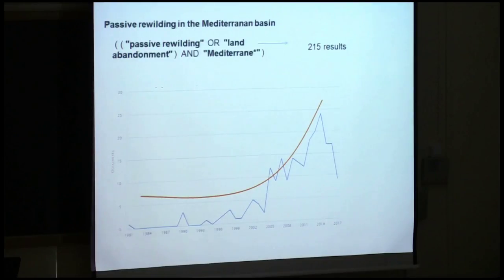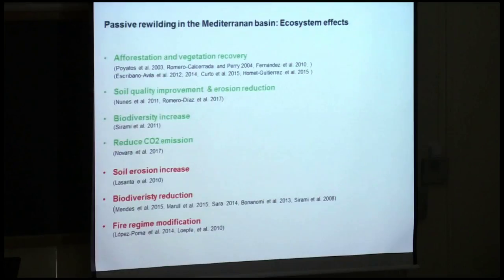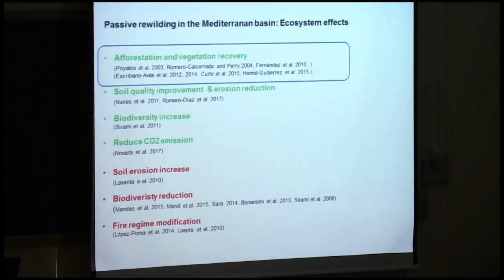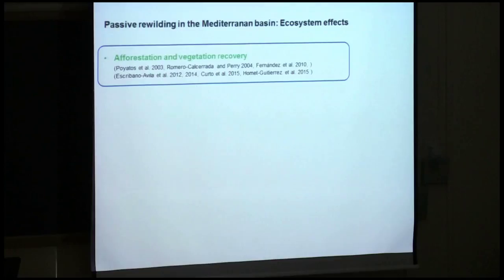In green you can see the positive effects of passive rewilding and in red the negative effects. I will particularly focus on the first ecosystem effect — afforestation and vegetation recovery — because this is one of the most common and most studied ecosystem effects, and also because the other ecosystem effects we can detect are pretty related to how much an abandoned land is forested or how much vegetation has recovered.